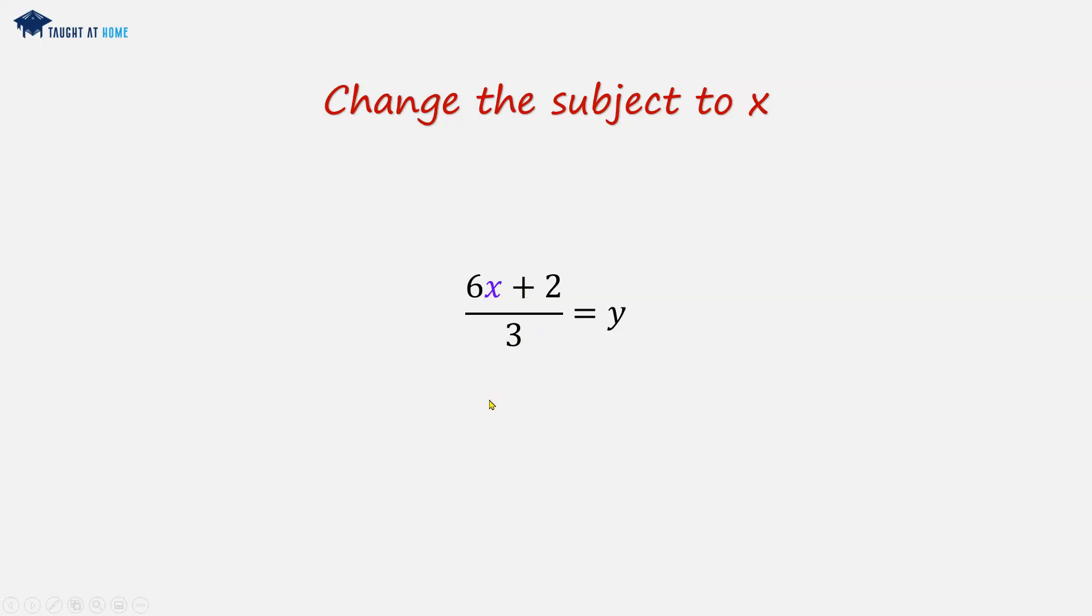So what we can do is multiply by 3. We're multiplying both sides by 3. Now these 3's cancel out. And we're left with 6x plus 2 is equal to 3 times y. Now we can subtract 2 from both sides. As these 2's cancel out. And so 6x is equal to 3y minus 2.